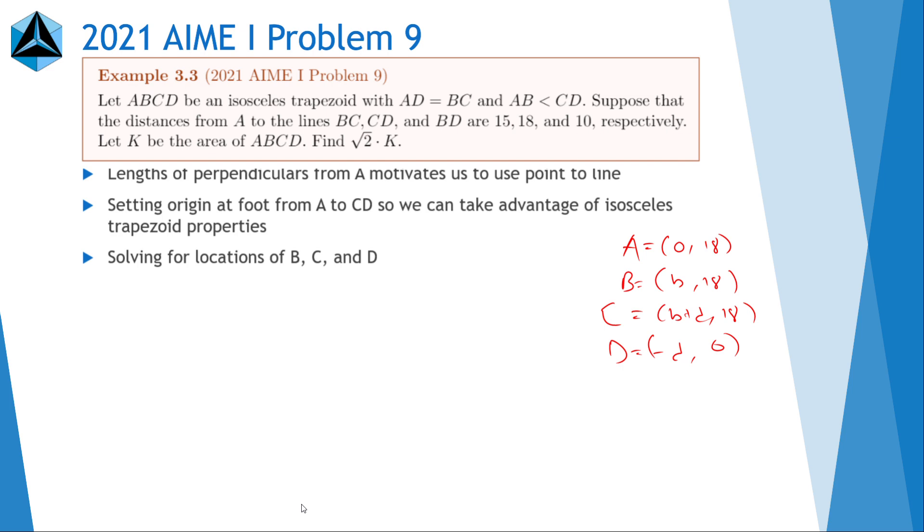So point to line for A to BD and A to BC gives us, we first need to find the equations of BD and BC. So BD is this from basic computations. And BC is Y equals 18 over negative D times X minus B minus D.